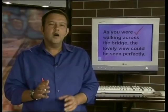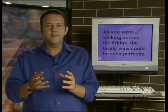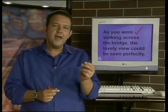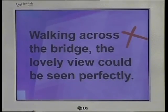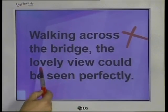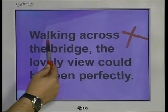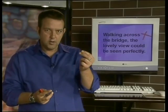Now the sentence is correct. What you need to look for then are verbs, particularly participles — those verbs which end in '-ing' — and then make sure that those verbs are being done by something. You have to add a subject to the verb. The verb 'walking' in this example is called a misrelated participle. Misrelated participles describe the wrong noun. So in our story about the bridge, it seemed as if the participle was being done by the view — the view was walking. When we corrected it, we made sure that someone logically — you — could walk.